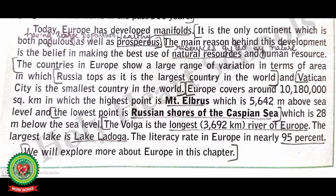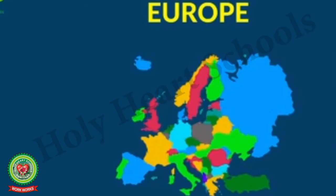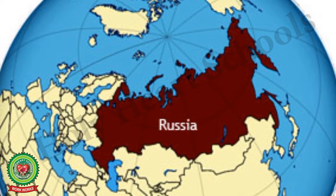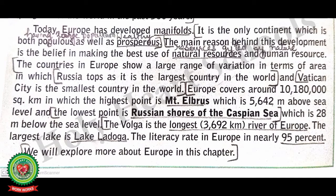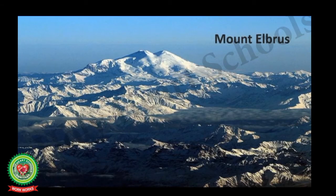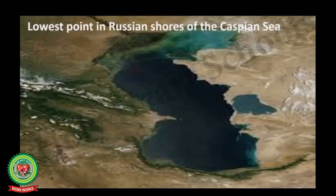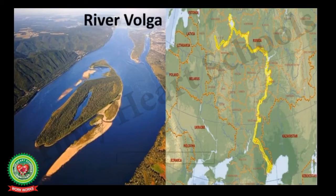The countries in Europe show a large range of variation in terms of area — Russia tops as the largest country in the world, while Vatican City is the smallest country in the world. Europe covers around 10,180,000 square kilometers. The highest point is Mount Elbrus at 5,642 meters above mean sea level, and the lowest point is the Russian shores of the Caspian Sea at 28 meters below sea level. The Volga is the longest river of Europe at 3,692 kilometers.